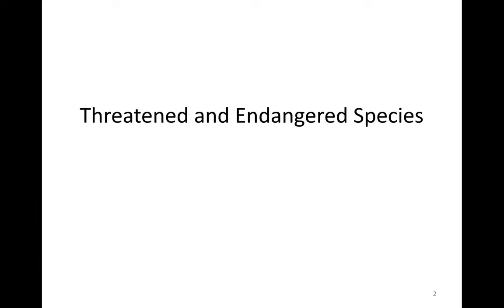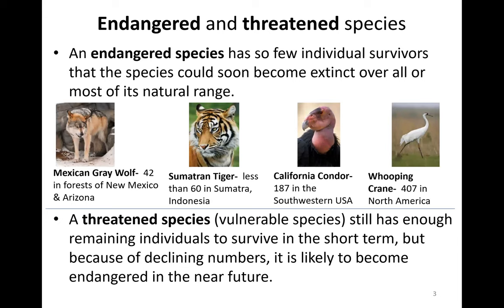First we'll discuss threatened and endangered species. Endangered species are species that have so few individual survivors that the species could soon become extinct overall or most of its natural range. Some examples are the Mexican gray wolf, with 42 in forests of New Mexico and Arizona; the Sumatran tiger, with fewer than 60; the California condor, with 187; and the whooping crane, with 407 in North America.